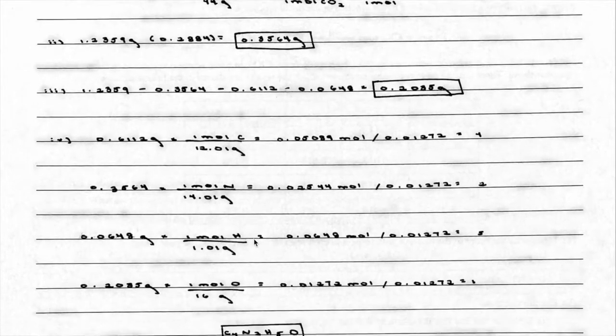Now, since it wants the empirical formula, what I need to do is take all the masses of the compounds, convert them into moles by dividing by each of their molar masses. Now I've got them in moles. Now I need to divide by the smallest number of moles, which is 0.01272, and I get these whole number values, 4, 2, 5, and 1. Remember if it were a decimal, like 2.5, you would then take those values and multiply by 2 in order to make them whole numbers. But it worked out nicely. There's my empirical formula right there.